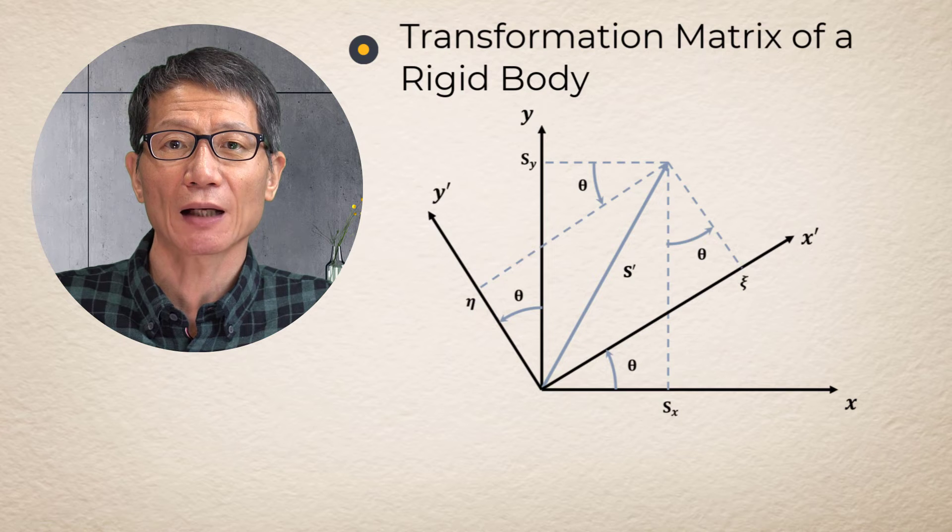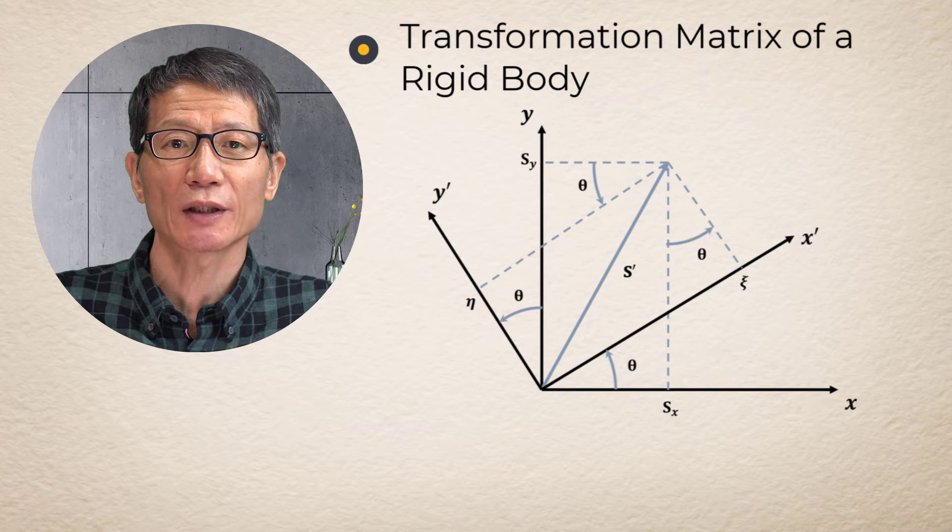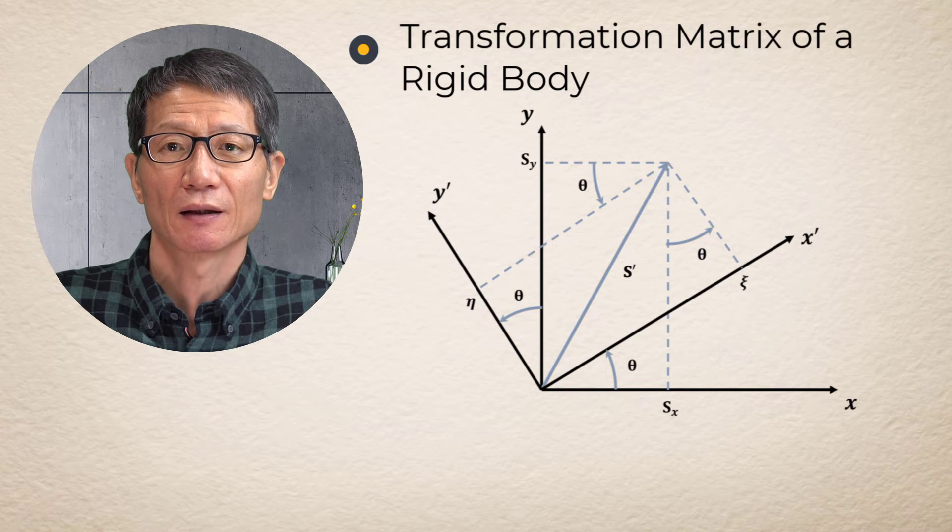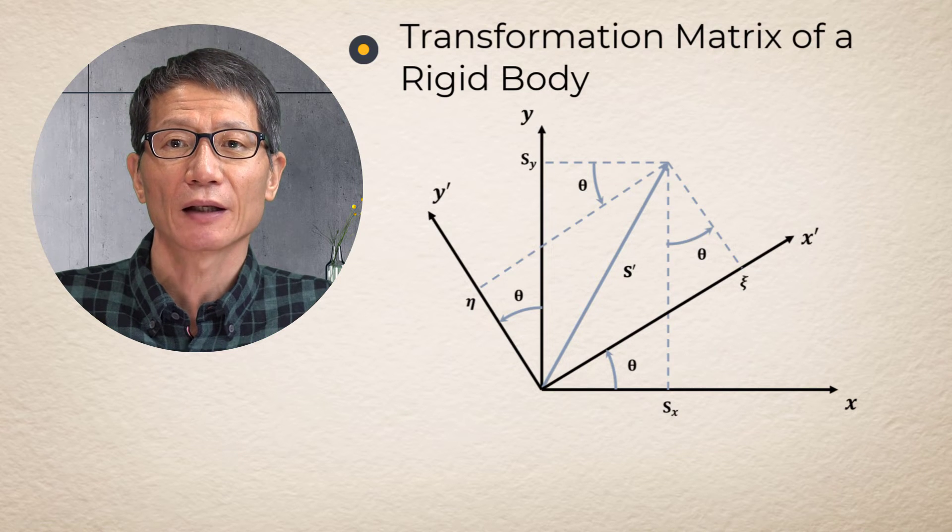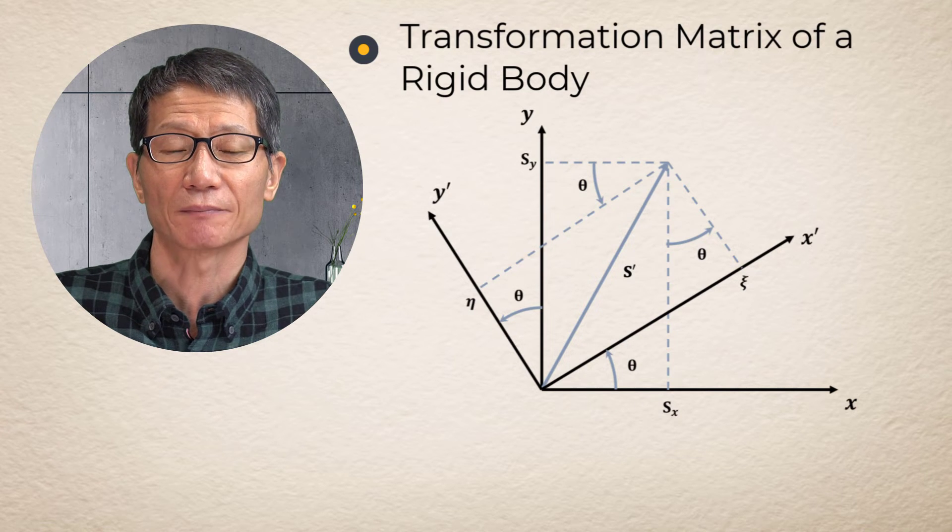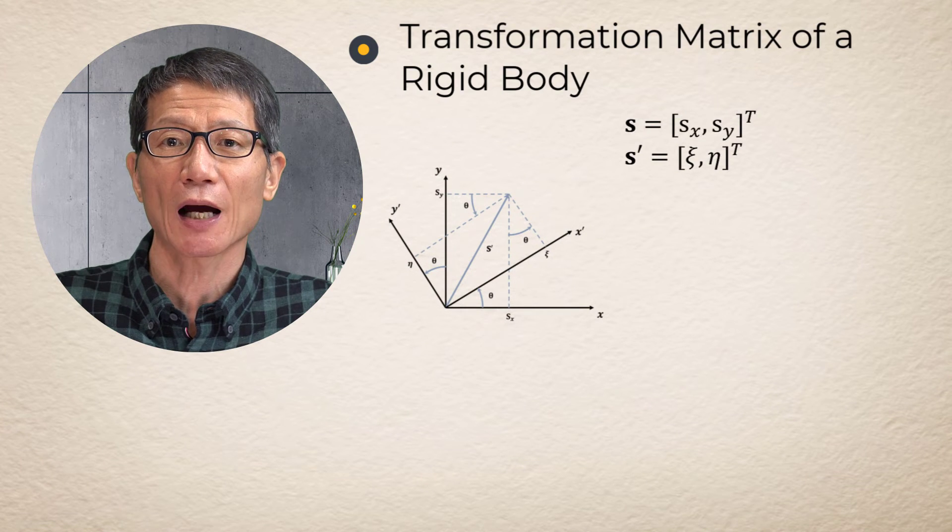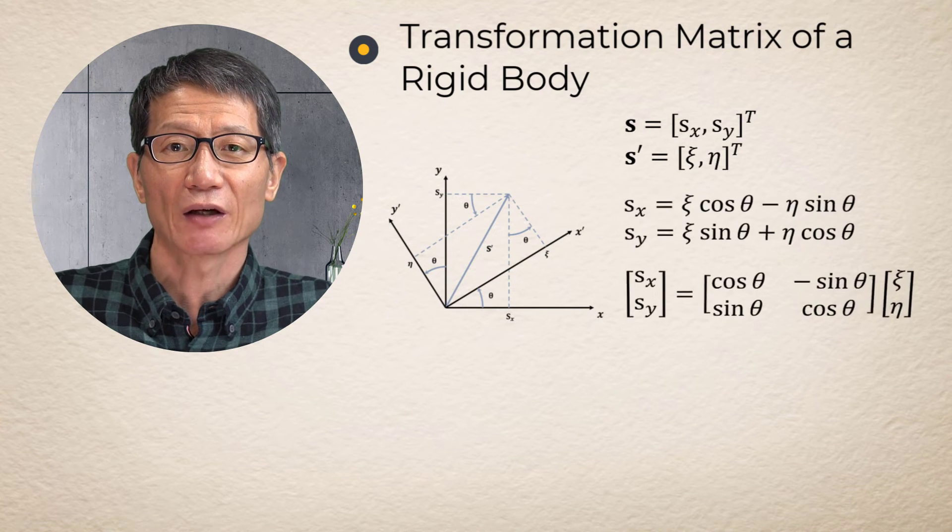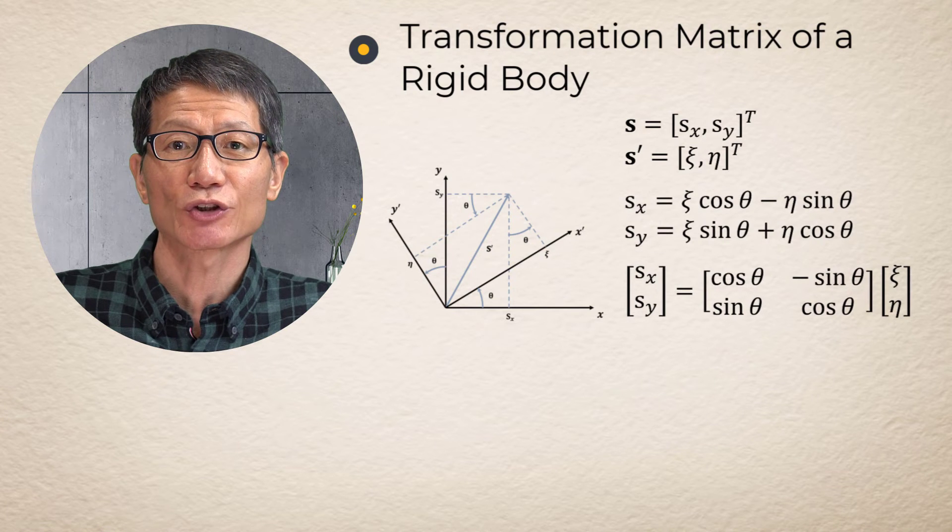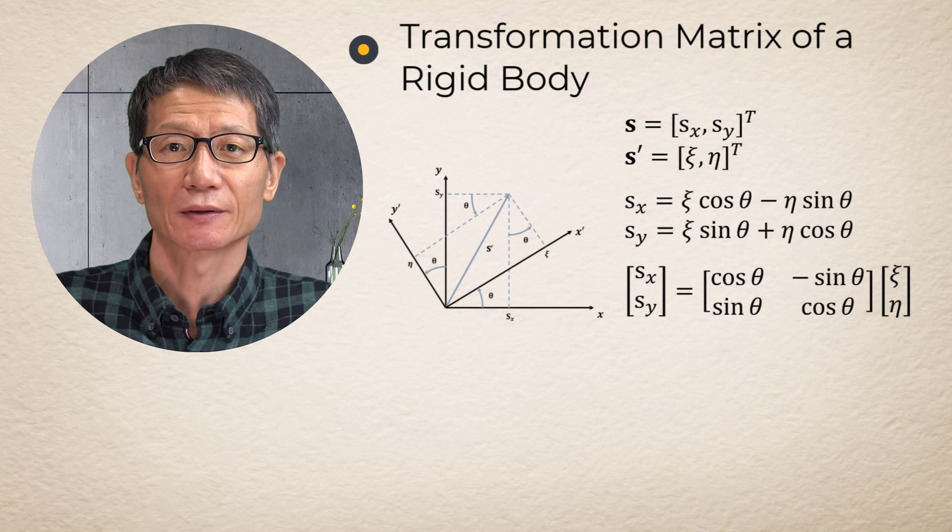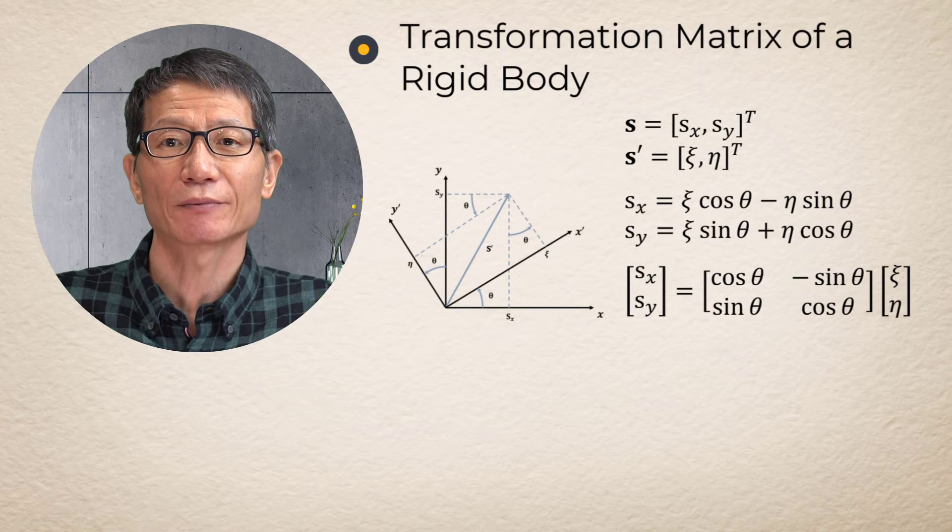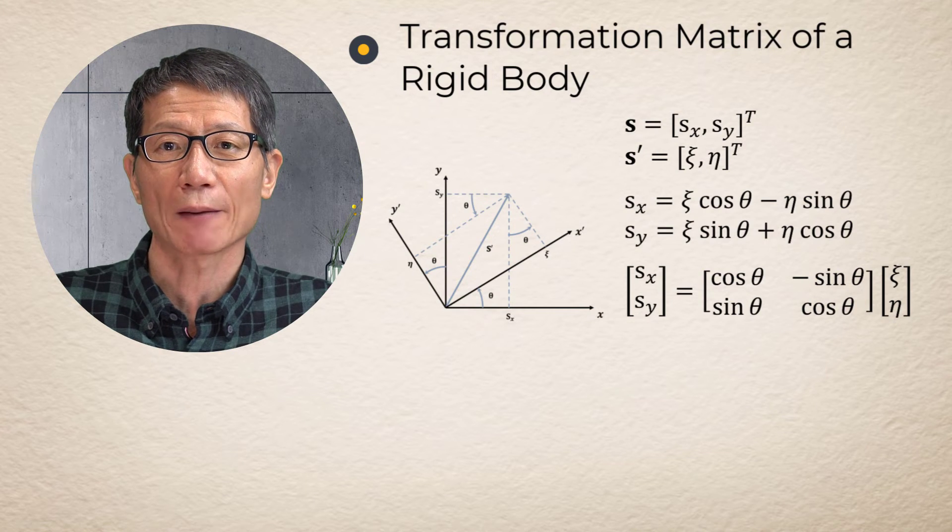Whenever a vector is multiplied by the coordinate transformation matrix, the resulting vector is the same vector expressed in other coordinate systems. Let's take a look at two vectors s and s prime in this figure. There exists the following relationship between two vectors. This relationship can be easily derived from the basics of geometry.